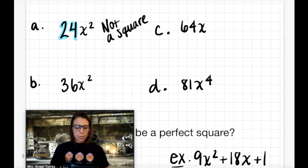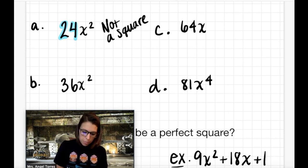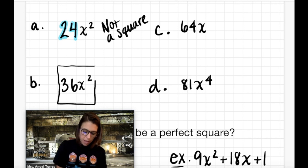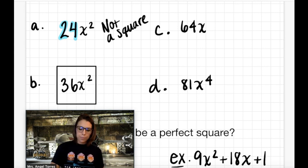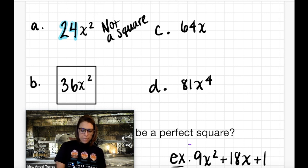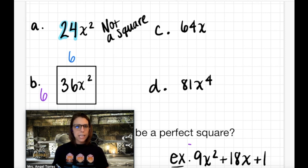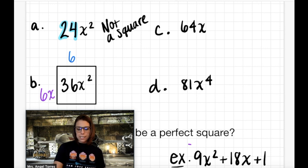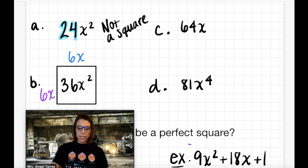What about letter B? We have 36x squared. Is 36 a perfect square? Yes. So let's put a square around this term and figure out what our length and width would have to be. The length and the width would have to be the same if this were a square. What times itself is 36? That would be 6 and 6. But that would only be an area of 36. To get 36x squared, that would require a width of 6x and a length of 6x, because x times x is how we get x squared. So this was a perfect square.